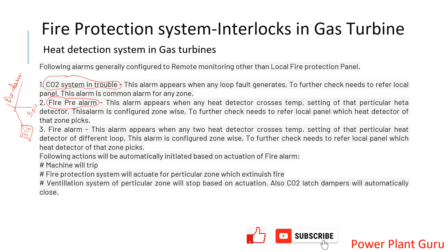The next condition is an actual fire alarm. If both sensors in a zone cross their alarm setpoints — for example, one crosses 330°C and the other crosses 320°C — then both heat detectors in that heat loop are reading values higher than the alarm setting. When any two heat detectors in the same zone both cross their temperature setpoints, a fire alarm is generated.